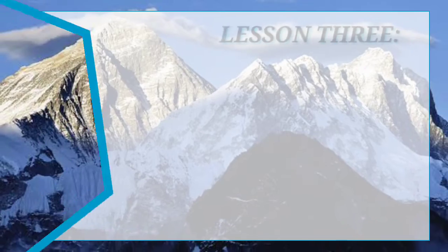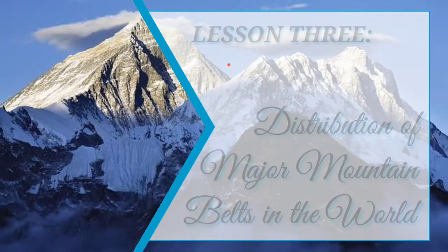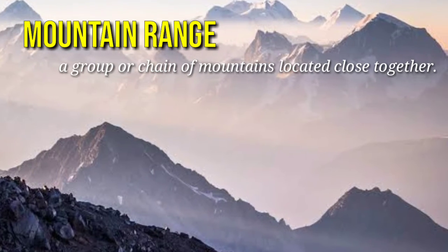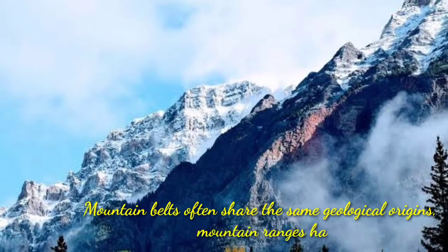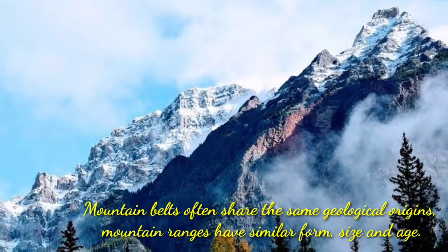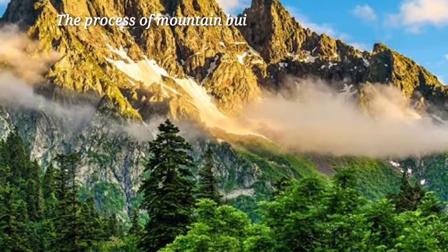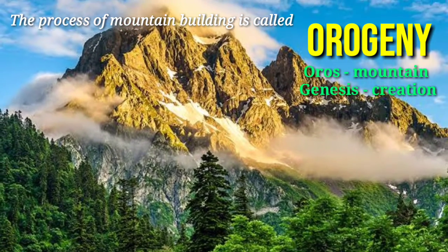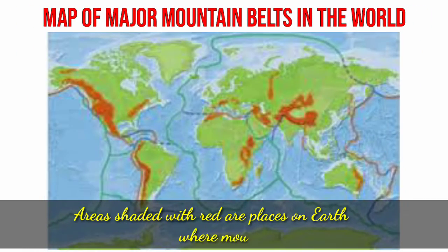Now let's discuss Lesson 3: Distribution of Major Mountain Belts in the World. A mountain range is a group or chain of mountains located close together. Mountain belts often share the same geological origins, and mountain ranges have similar form, size, and age. The process of mountain building is called Orogeny, which comes from the word 'Oros,' meaning mountain, and 'Genesis,' meaning creation. Now let's study this illustration showing the map of the major mountain belts in the world.